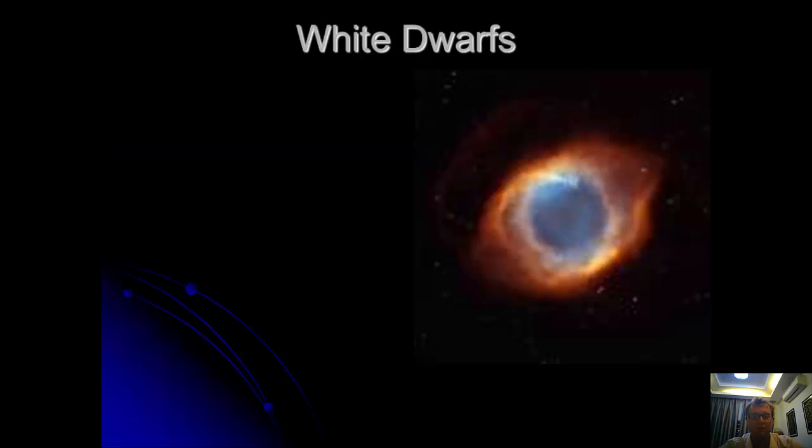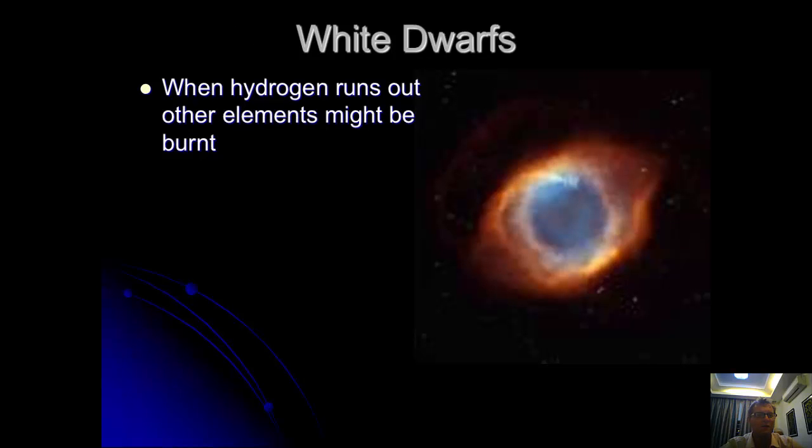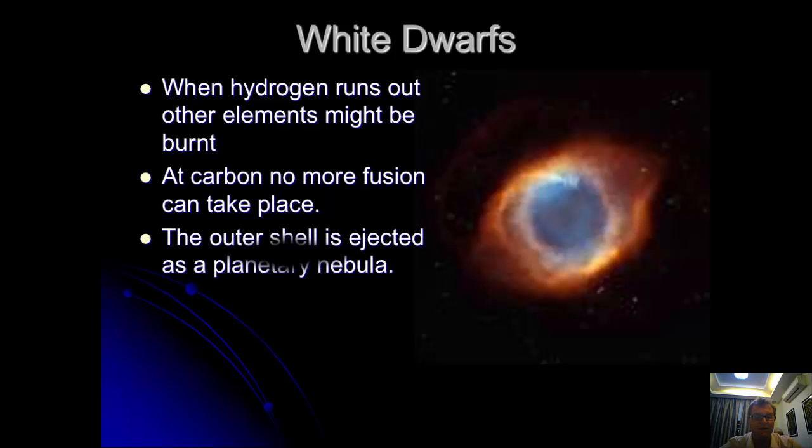When the hydrogen runs out, all of the elements may be burnt, nuclear synthesis here. But at carbon, no matter what, there's no more fusion can take place. That's the end of that. So the outer shell is ejected as a planetary nebula. Earlier on, remember, I said that those outer shells can be quite unstable, so often they can be ejected. And we can see this in the image which I'm showing here.